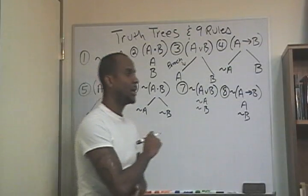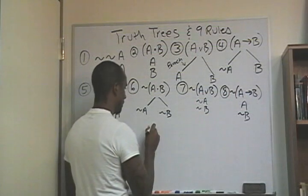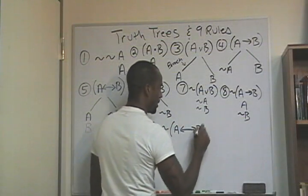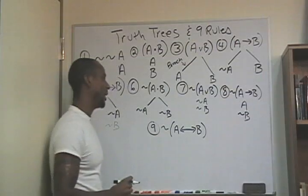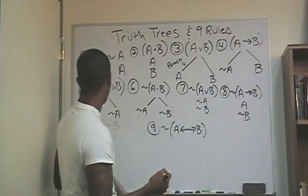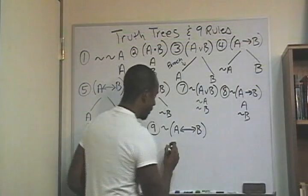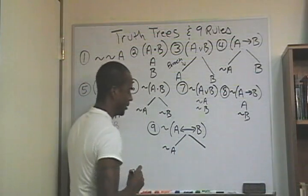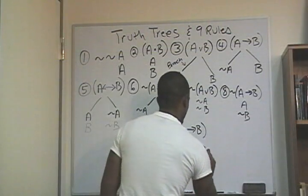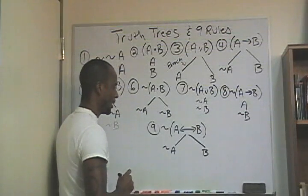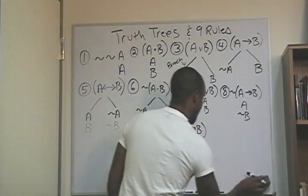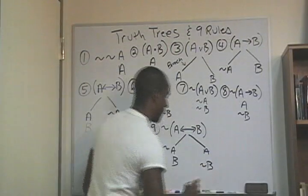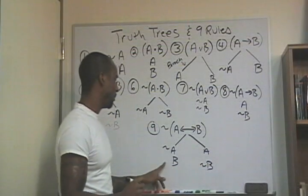And lastly, number nine is the negation of a biconditional: not (if and only if A, then B). We're going to have to distribute the negation. We create our branches: on one side not A, on the other side A. Then we'll have B on one side and not B on the other. So: not A paired with B, and A paired with not B.